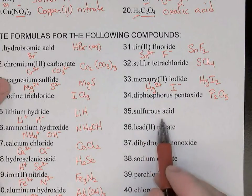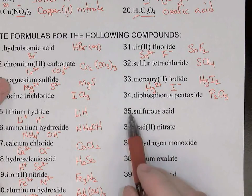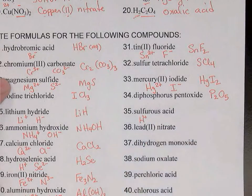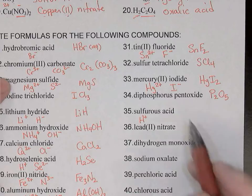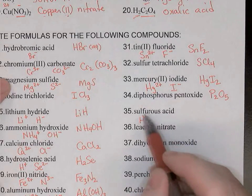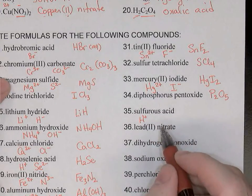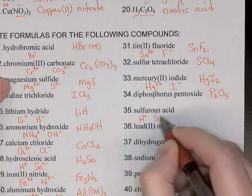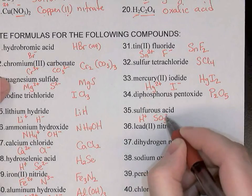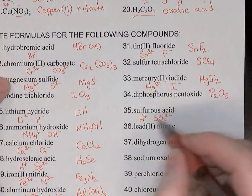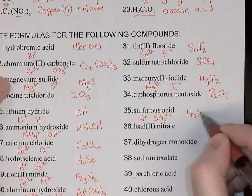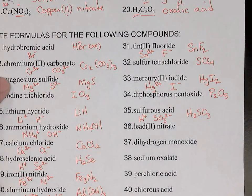Sulfurous acid: there's no hydro at the beginning, so this must be a hydrogen ion bonded to a complex ion. Since the name ends in -ous, the complex ion must have ended in -ite. So this was the sulfite ion, SO3²⁻. Two hydrogens will be needed to cancel that negative charge: H2SO3.